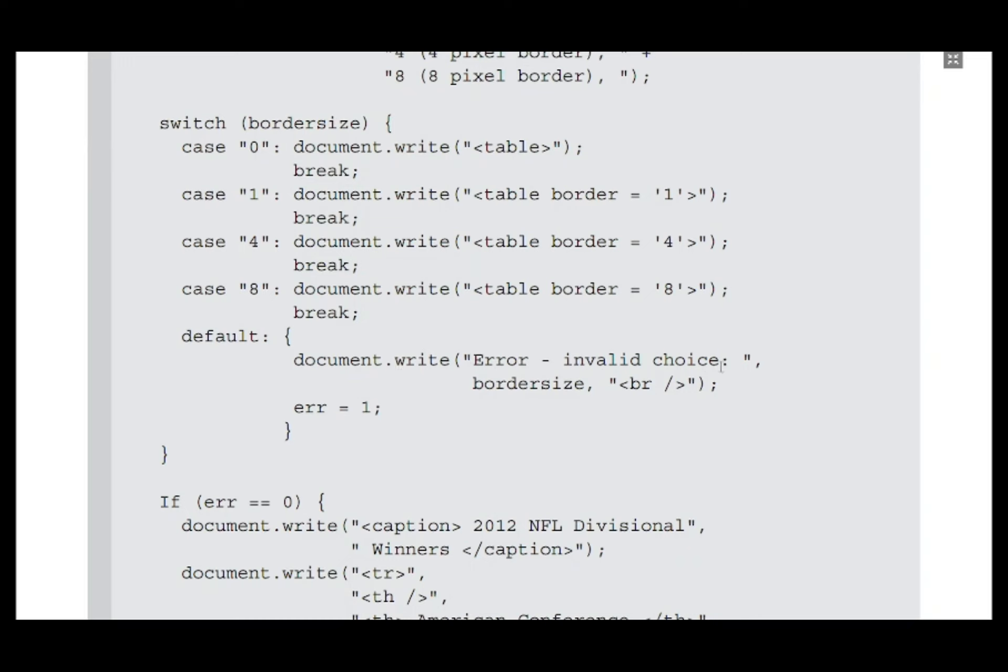In the document.write statement, first the string 'error invalid choice' is displayed, then the border size variable's value is displayed so the user can check what went wrong. Then the err variable is set as one.